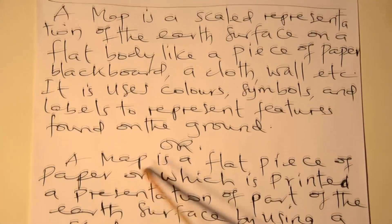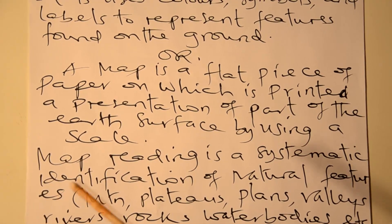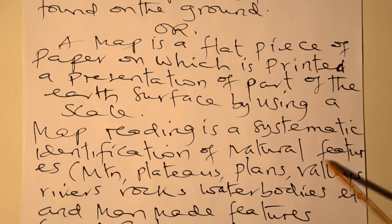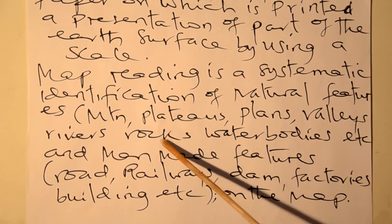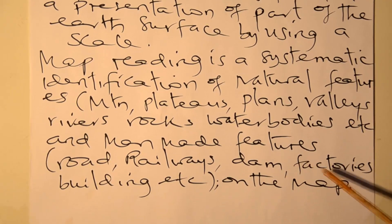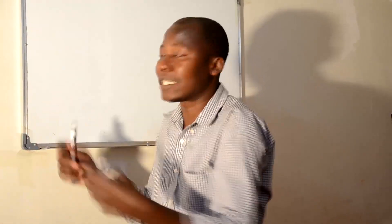A map is also a flat piece of paper on which is printed a representation of parts of the surface using a scale. Map reading is the systematic identification and communication of natural features — for instance, mountains, plateaus, plains, valleys, rivers, lakes, water bodies — and man-made features such as roads, dams, factories, and buildings on the map. Wherever we talk about a map, it is the process of representing features from the Earth's surface onto a sheet, either natural or artificial, using a scale.